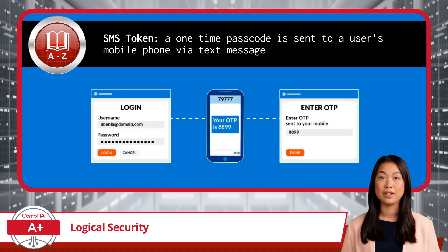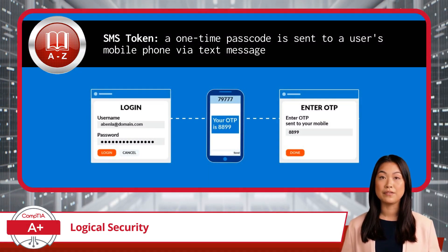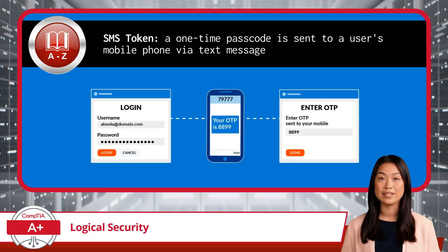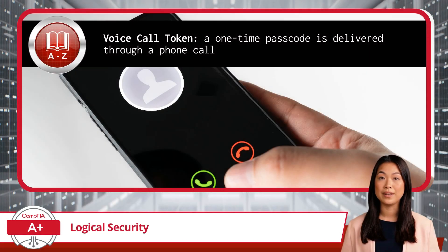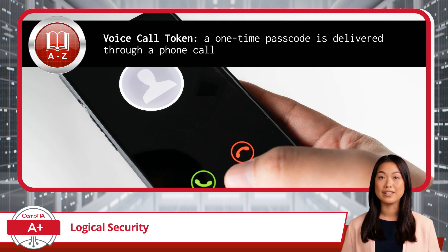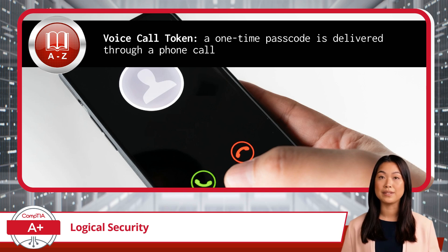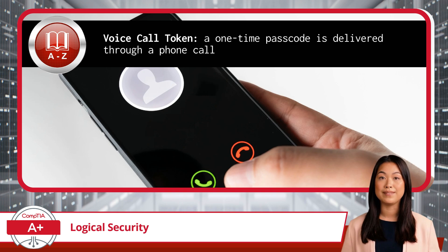SMS tokens are another MFA method, where a one-time passcode is sent to a user's mobile phone by text message. The user must enter this code in addition to their password to gain access to a system. For one more MFA method, we have voice call tokens. Voice call authentication operates similarly to SMS-based authentication, but instead delivers the one-time passcode through a phone call. The user answers the call, listens to the code, and then enters it into the system.